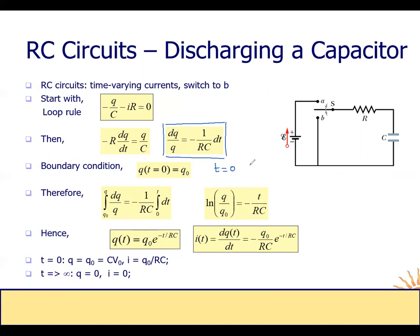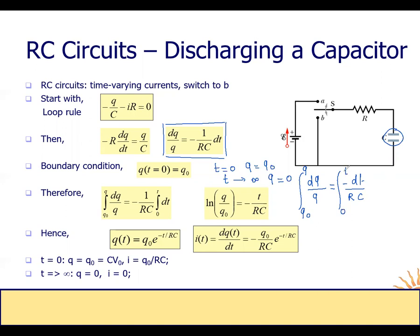Here we have the result: dQ divided by Q equals minus dt divided by RC. We integrate from the initial value: at time equals zero we have Q equals Q_initial, and at time equals infinity the capacitor must be fully discharged so Q equals zero. For a general time t, we integrate from Q_0 to Q on the left side, and from 0 to t on the right side.